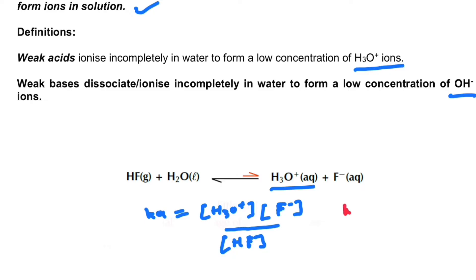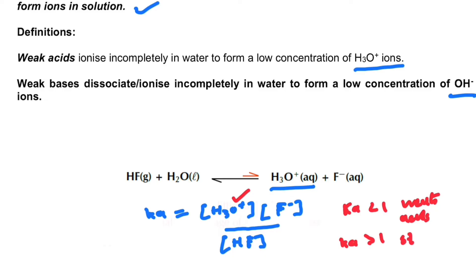For a weak acid, the Ka value is expected to be less than one. For HCl, which is a strong acid, the Ka value would be greater than one, because it produces a higher concentration of H₃O⁺. If we have a proper fraction, it is a weak acid; if we have an improper fraction, then it is a strong acid — the Ka value will be greater than one.